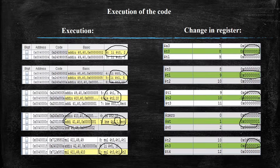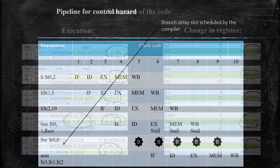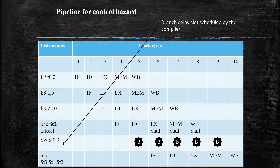We can see the result as hexadecimal value 32, which is 50 in decimal. So the result 50 is stored in register T3. We just saw the execution of the code in MARS simulator. Now let's see the pipeline diagram for this code. In MIPS architecture, whenever a branching statement is found, three stalls are introduced.